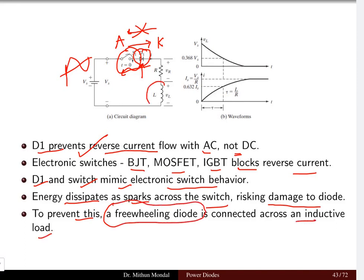To prevent this we will be connecting a freewheeling diode across the inductive load. So here we have the load which is inductive in nature. We will be connecting a diode here which is the freewheeling diode. When you have an RL load then you should connect a freewheeling diode in your circuit. This will prevent any form of damage which can take place to the diode.